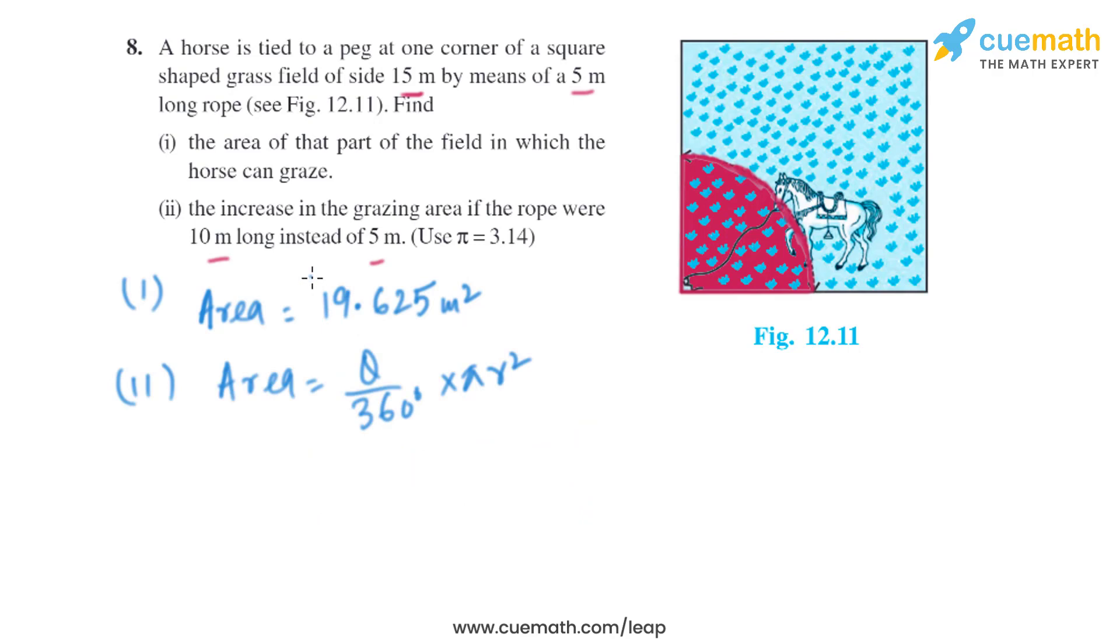Now in the second part, the length of the rope is increased to 10 meters. So when the length of the rope is increased to 10 meters, we'll take the radius as 10 instead of 5.